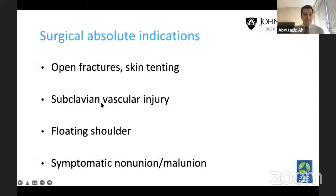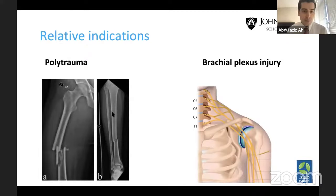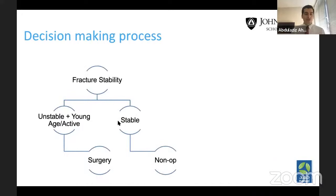In terms of treatment, absolute indications for surgery include open fractures, skin tenting, subclavian vascular injury, floating shoulders, and symptomatic nonunions and malunions. Relative indications include polytrauma that facilitates rehabilitation and brachial plexus palsy — though about 66% recover spontaneously, so there is controversy. My algorithm looks at fracture stability using the Neer classification: if it's a type 2 or 5 in a younger, active patient, I'll proceed with surgery. If it's type 1 or 3, or an 80-year-old inactive patient, I lean toward non-operative treatment.